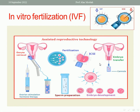In gamete intrafallopian transfer (GIFT), the sperm is taken, washed, and prepared. The oocyte is also retrieved from the ovary. Then both gametes—sperm and oocyte—are transferred to the outer third of the fallopian tube, guided by transvaginal ultrasound. So the gametes are transferred inside the fallopian tube, which is why it is called gamete intrafallopian transfer.